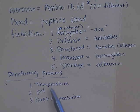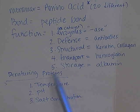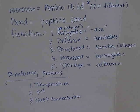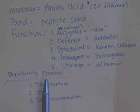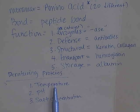We'll get into more detail about denaturing proteins, specifically denaturing enzymes, when we get into Unit 3. But for now, know that denaturing means making proteins non-functional, and you can do that by exposing them to different temperatures, pH, and salt concentrations.